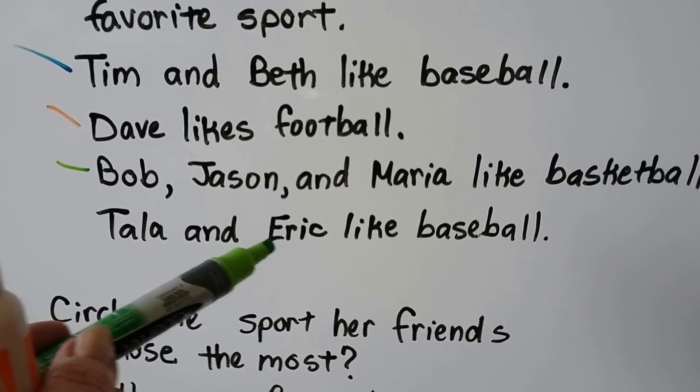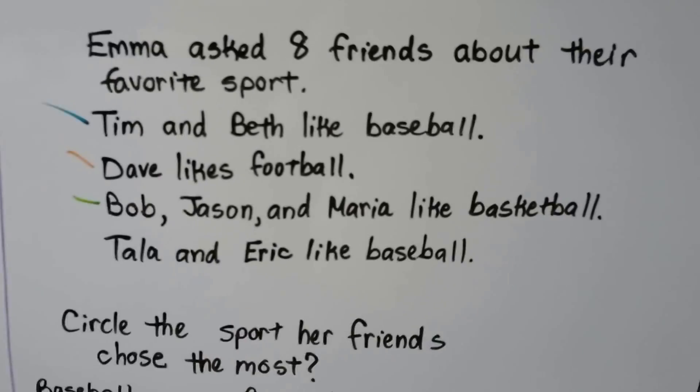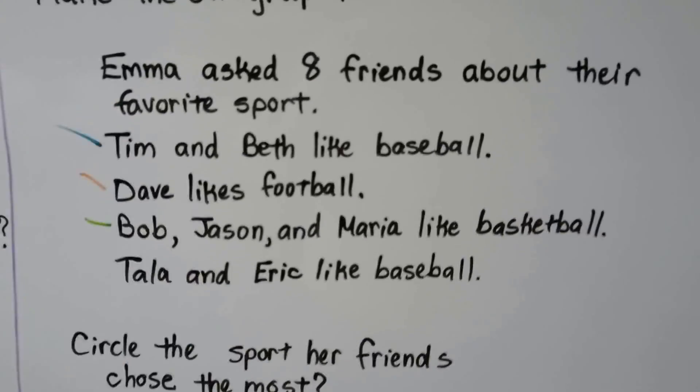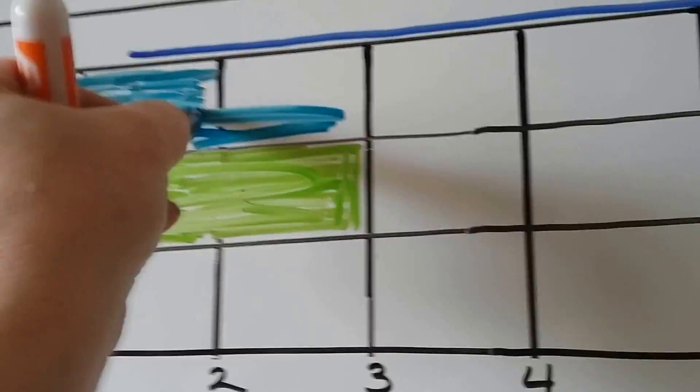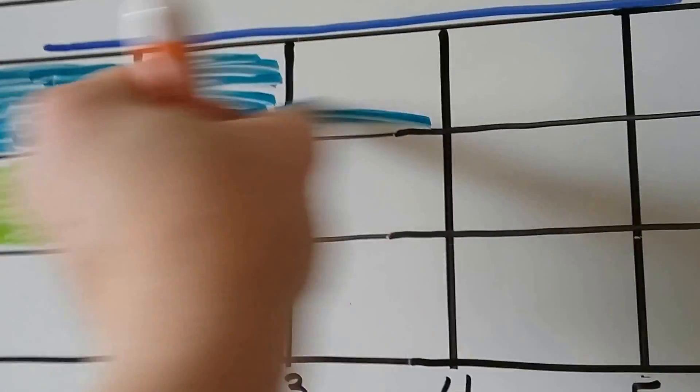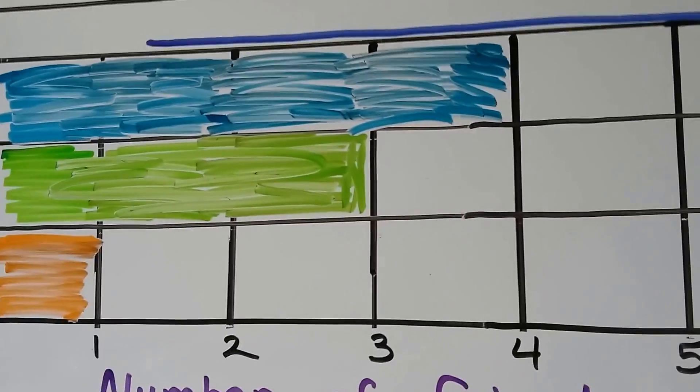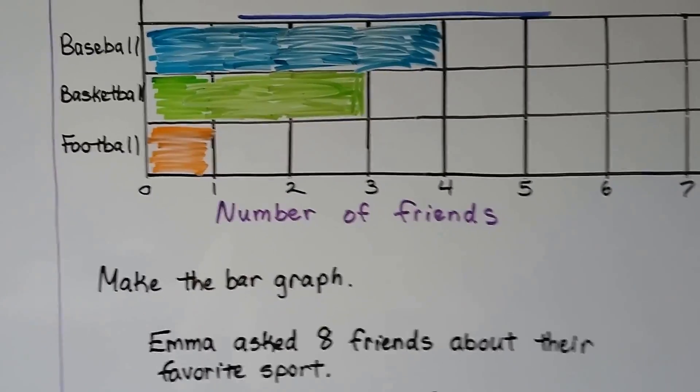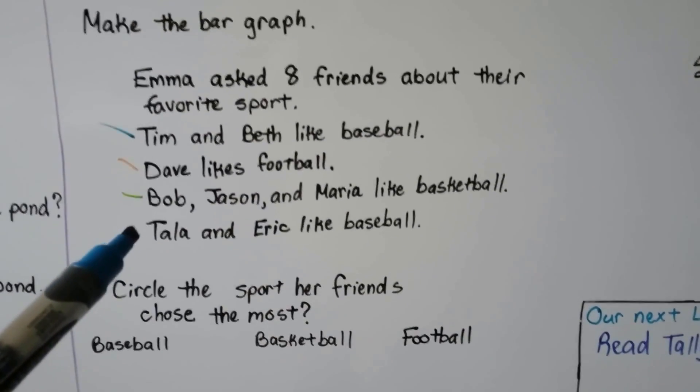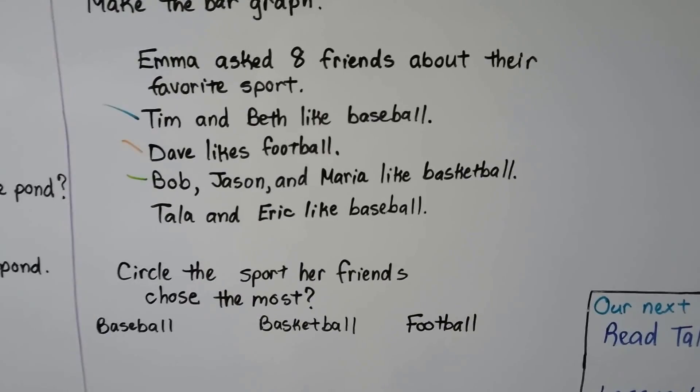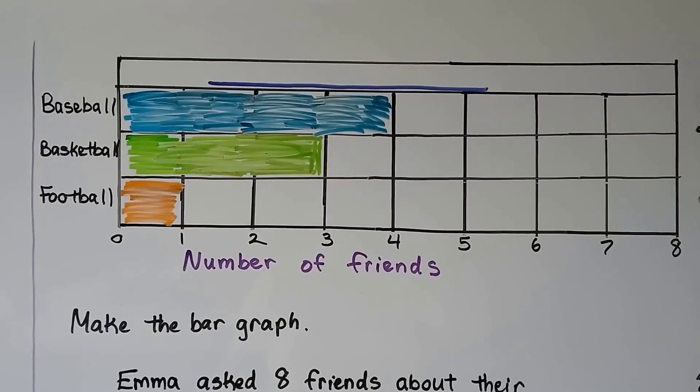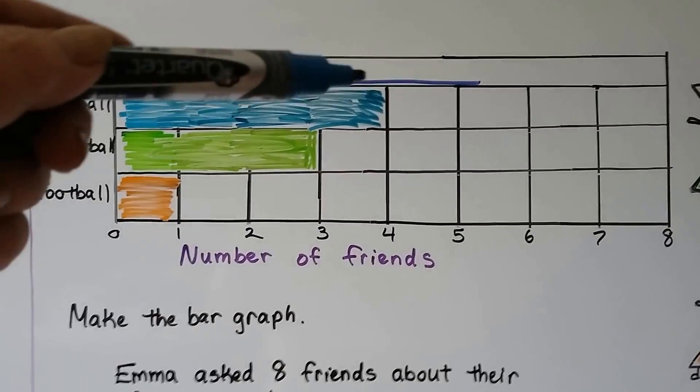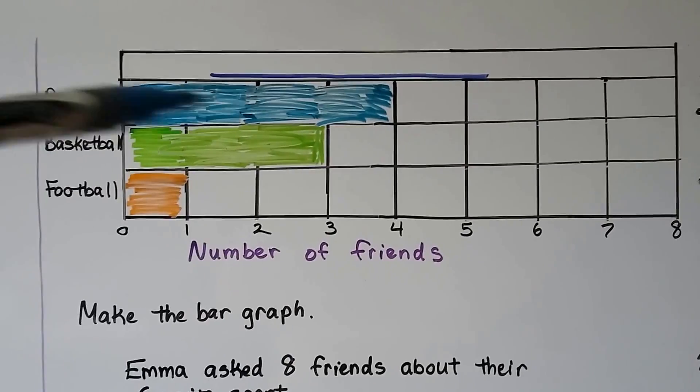Then it says Tala and Eric like baseball. So we have one, two more people that like baseball. So we need to fill in two more squares for baseball. So we go back to baseball and we fill in two more. One, two. That's pretty good, kind of messy, but you know what I'm trying to do. So we did the Tala and Eric like baseball. It says circle the sport her friends chose the most. And we can just look at the bar graph and tell which sport they chose the most. It's the one whose bar is sticking out the longest. It's the baseball.